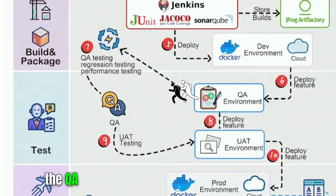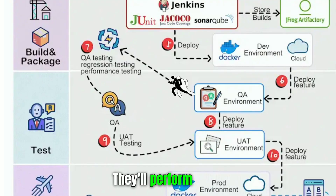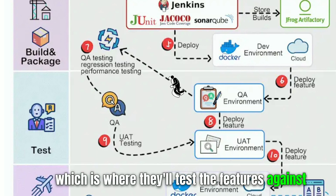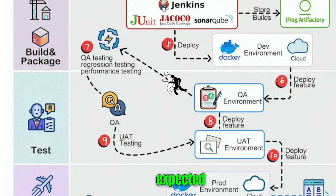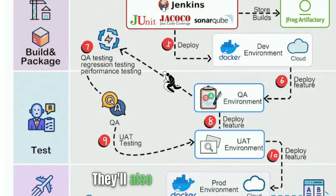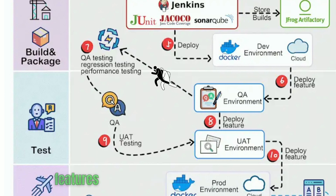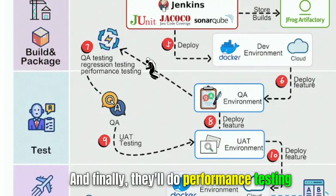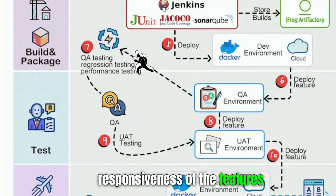In step seven, the QA team picks up the new QA environments and starts testing. They'll perform QA testing, where they test features against the requirements to make sure they're working as expected. They'll also do regression testing, which ensures the existing features haven't been broken by the new changes. And finally, they'll do performance testing, which tests the speed and responsiveness of the features.